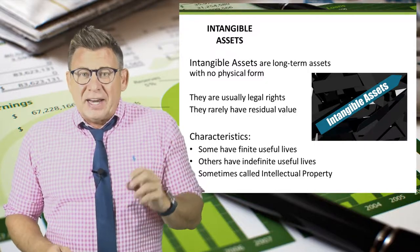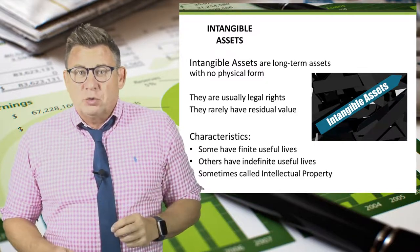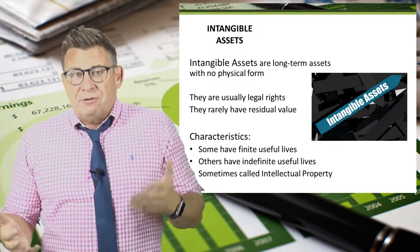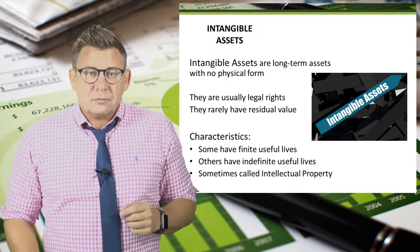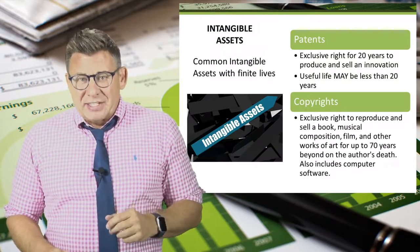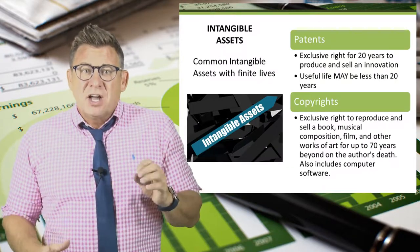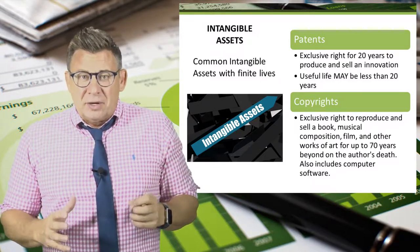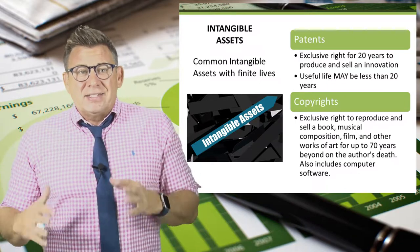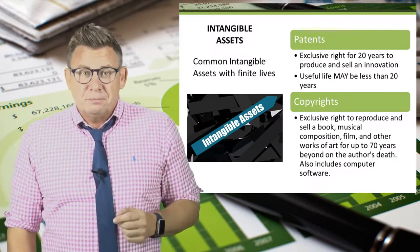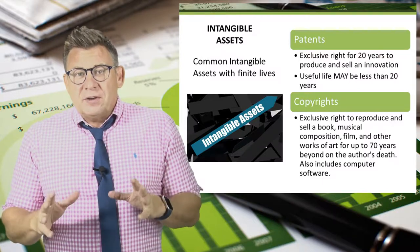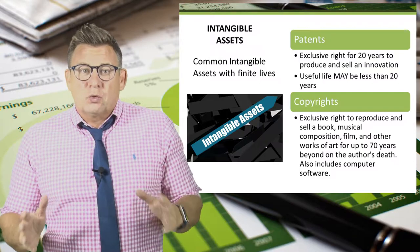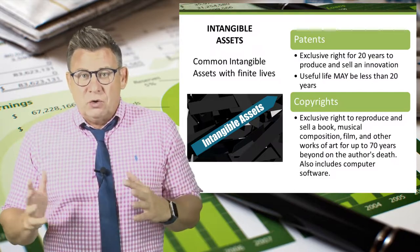Intangible assets with finite useful lives rarely have residual values because the legal protections expire at the end of the useful life, rendering them worthless. The two common types of intangible assets with finite lives are patents and copyrights. Patents are the legal rights granted by the federal government that grant exclusive rights for 20 years to produce or sell an innovation. Note that the useful life of a patent is often less than 20 years as technology changes render innovations outdated or obsolete.